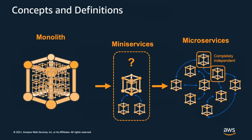So what is a microservice? A microservice is tightly scoped, strongly encapsulated, loosely coupled, independently deployable, and scalable. Organizations use techniques such as service-oriented architecture or domain-driven design to develop and deploy them. In contrast, a monolith is a tightly coupled, single-tiered application where the user interface and data are combined into a single program for a single platform.